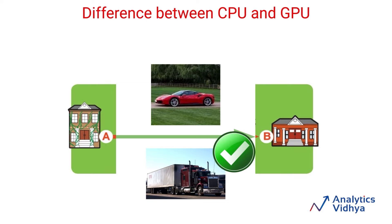Now, why am I discussing Ferrari and truck? Because this is exactly the same difference between CPUs and GPUs. So let's now understand how the choice of hardware will make a difference in your deep learning algorithms and computations.